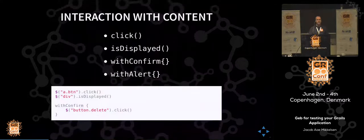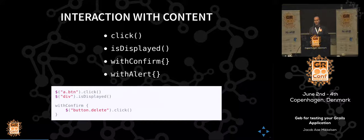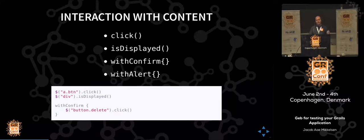We can also interact with content, which is needed if we have to act like a browser. The dot-click method simply clicks a button, a link, or anything we can select in our DOM. isDisplayed is very handy for checking whether something is actually visible on the screen — it could be something that was hidden. When it comes to JavaScript, lots of frameworks have a hard time handling it. GEB does a very nice job because it just has closures you can use. If there's a confirm box or an alert you need to dismiss, you can use the withConfirm or withAlert closures.